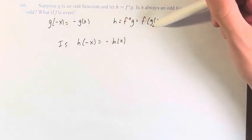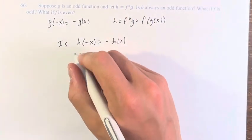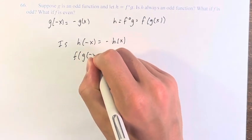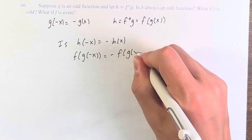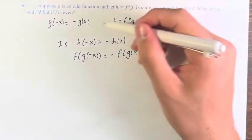So writing it in terms of the composition that we know, is f of g of negative x equal to negative f of g of x? Plugging in this into h.